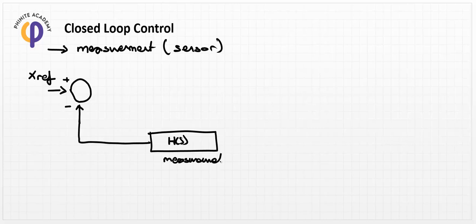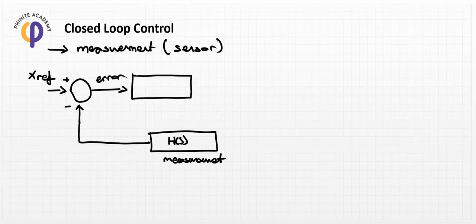We can feed back the position of the system in order to create an error signal, because the error is directly used in control theory to generate a proper control signal using C_s.